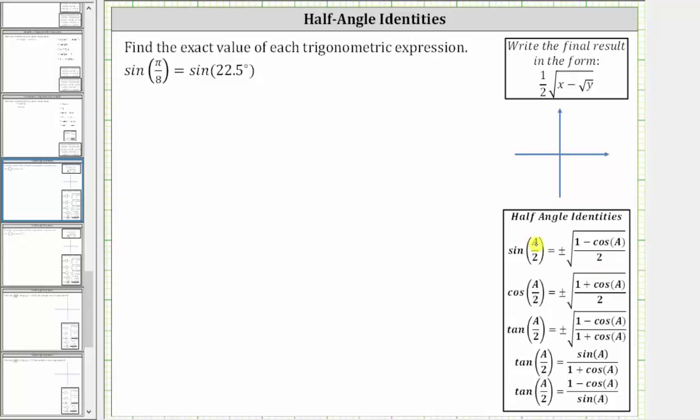The first step is to find the value of a, where a divided by two equals the given angle, which in our case is 22.5 degrees. If we double this angle and divide by two, we will still have 22.5 degrees.